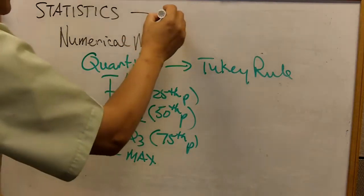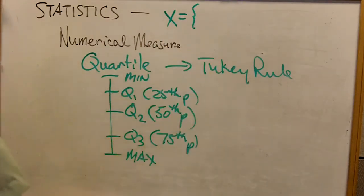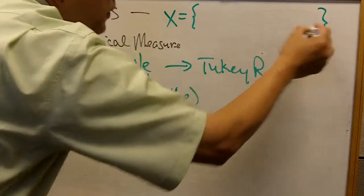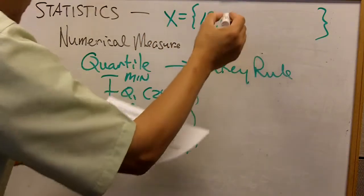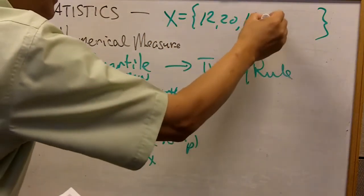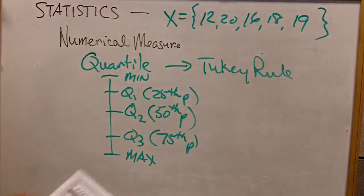Now, using the example that we have, going back to the five hourly wages of employees at Home Depot - we have $12, $20, $16, $18, and $19. This would be an easy example to use for our illustration.